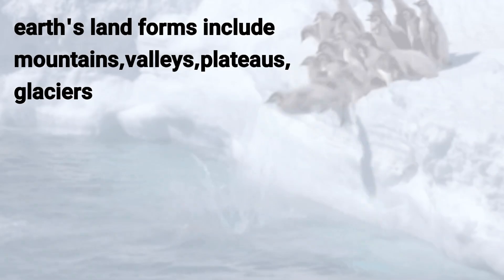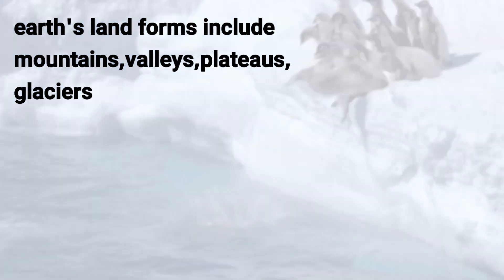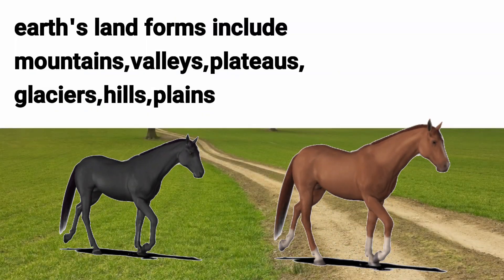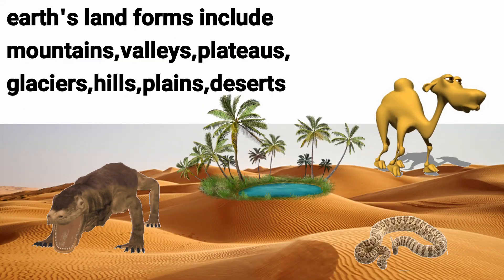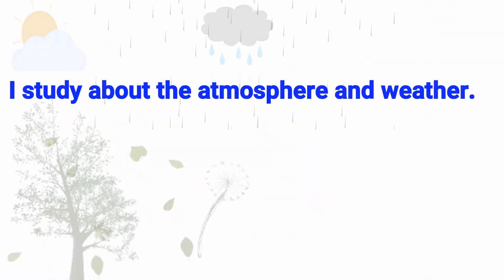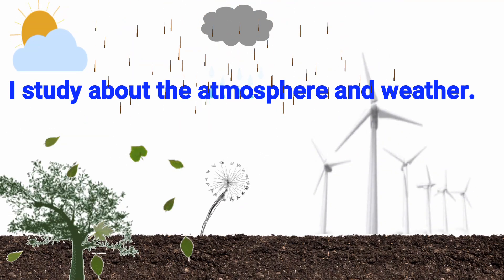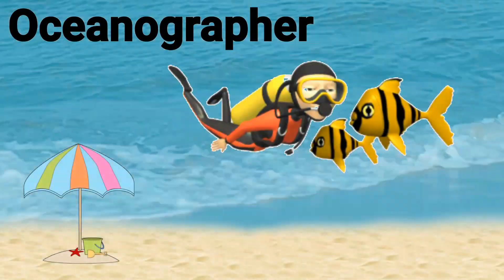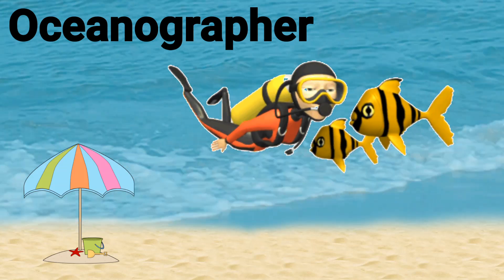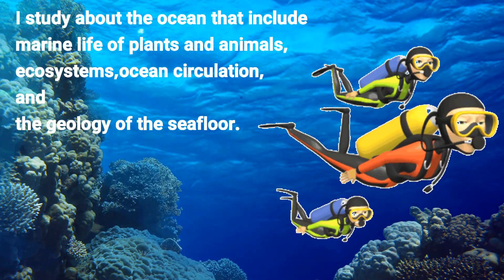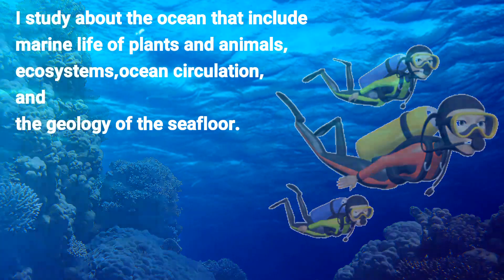Geologist (continued): Earth's landforms also include glaciers, hills, plains, and deserts. Meteorologist: I study the atmosphere and weather.